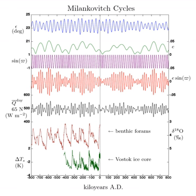Exoplanets: Scientists using computer models to study extreme axial tilts have concluded that high obliquity would cause climate extremes that would threaten Earth-like life. They noted that high obliquity would not likely sterilize a planet completely, but would make it harder for warm-blooded, land-based life to thrive.